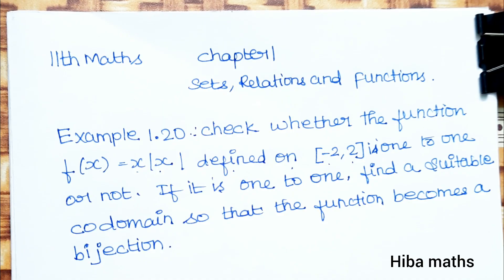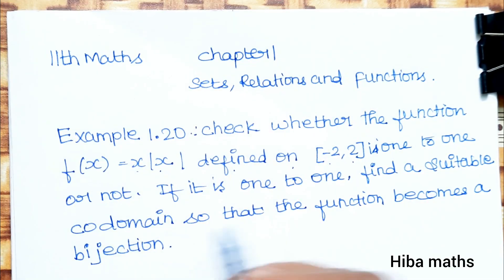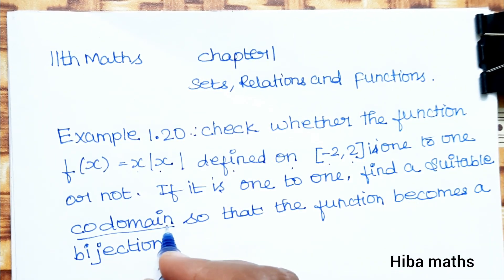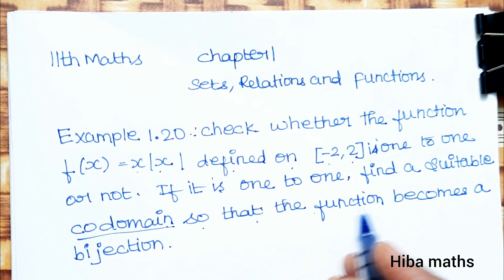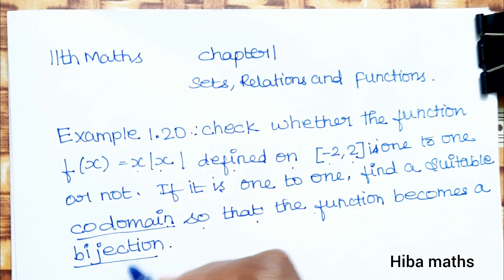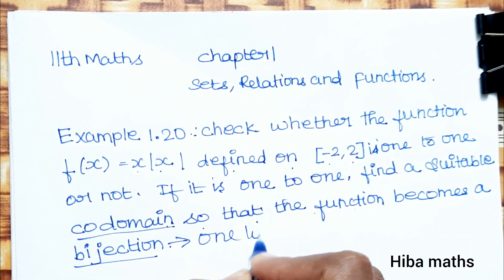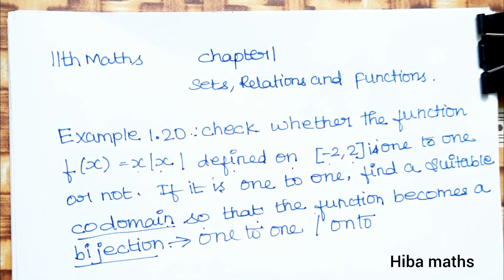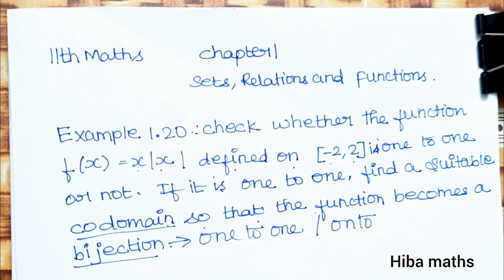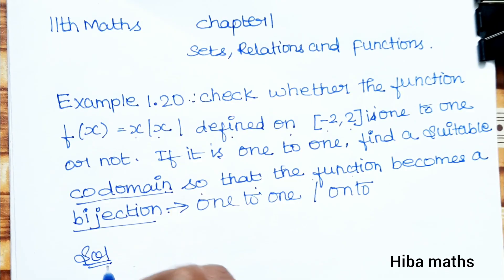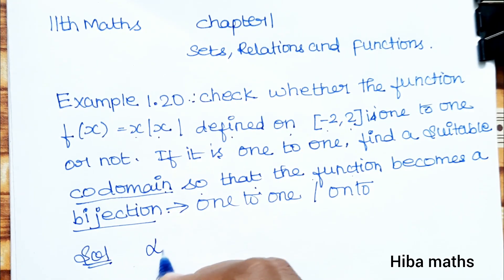First, we need to determine if it is 1 to 1 or not. If it is 1 to 1, find a suitable domain so that the function becomes a bijection. If it satisfies 1 to 1 and onto, then it is a bijection. So first, in the solution, we will prove it is 1 to 1.